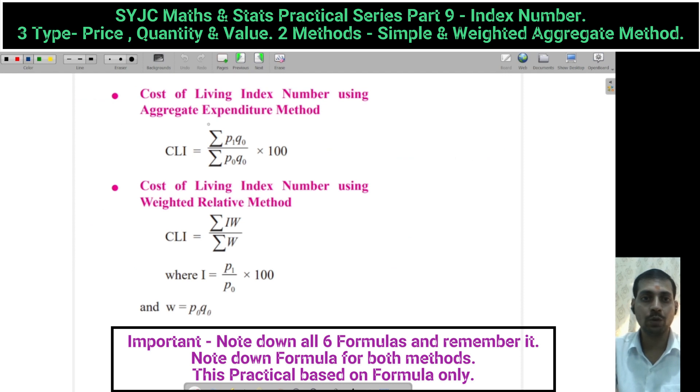Cost of living index number using aggregate expenditure method - short form CLI. There are 2 methods: Aggregate expenditure and weighted relative. Keep in mind, learn it, revise it, copy down. Now let's continue.